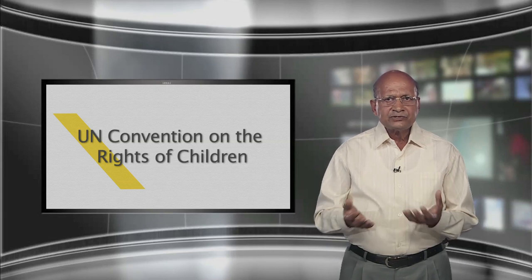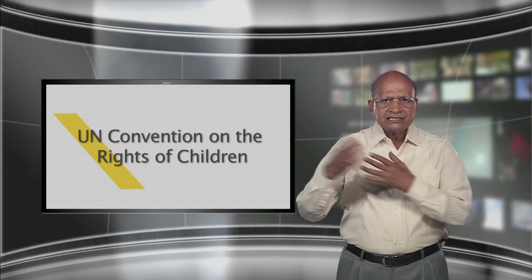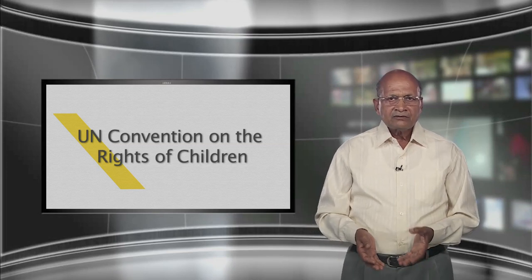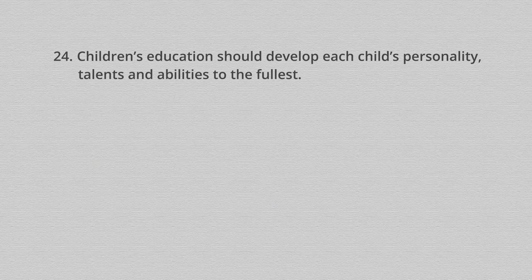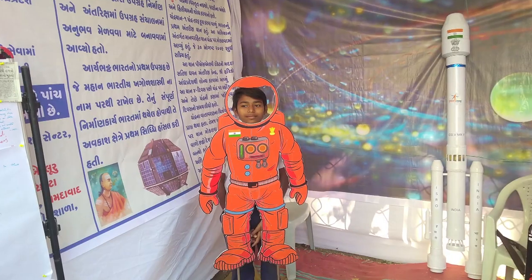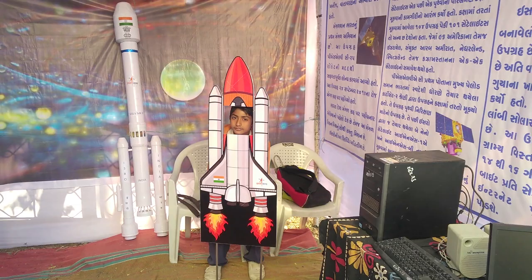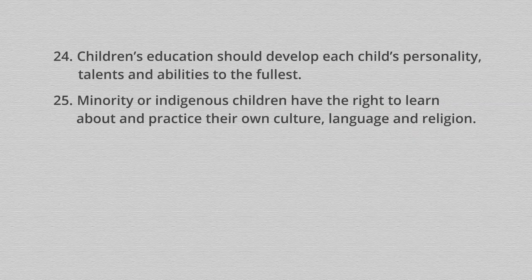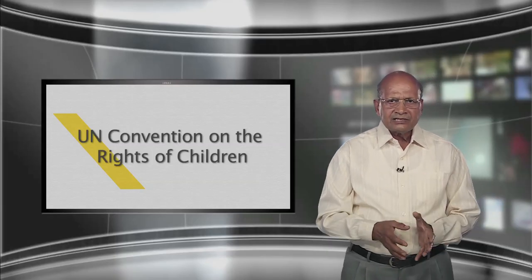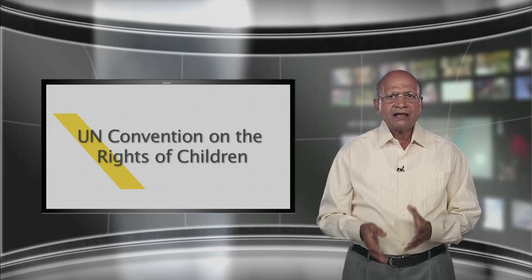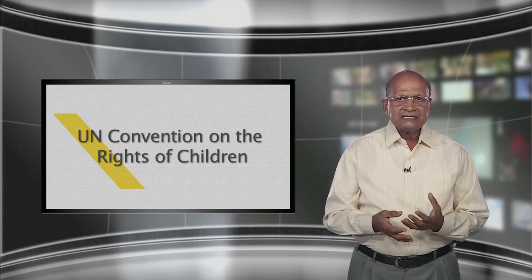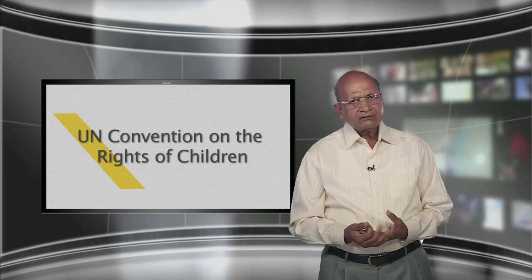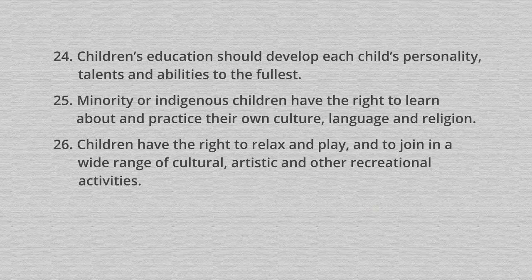25. The Convention places a high value on education. 26. Young people should be encouraged to reach the highest level of education of which they are capable. Children's education should develop each child's personality, talents and abilities to the fullest. 25. Minority or indigenous children have the right to learn about and practice their own culture, language and religion. The right to practice one's own culture, language and religion applies to everyone; the Convention here highlights rights in instances where practices are not shared by the majority of people in the country. 26. Children have the right to relax and play and to join in a wide range of cultural, artistic and other recreational activities.